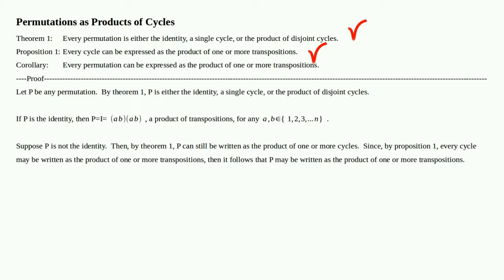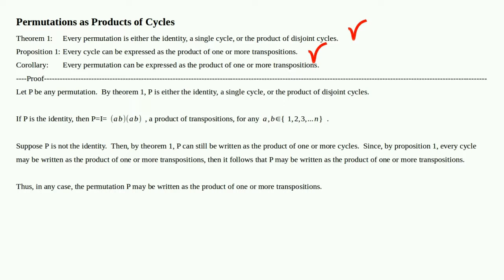All of those cycles can be written as transpositions. Therefore p may be written as the product of one or more transpositions. Thus in any case, the permutation p may be written as the product of one or more transpositions. QED.